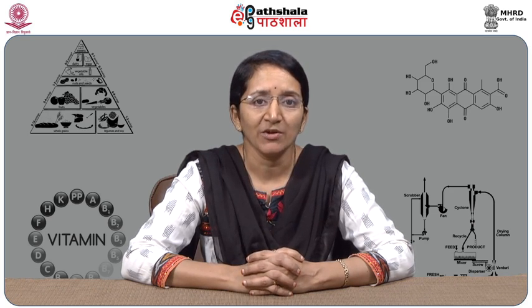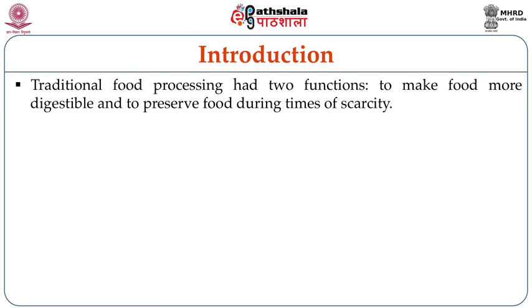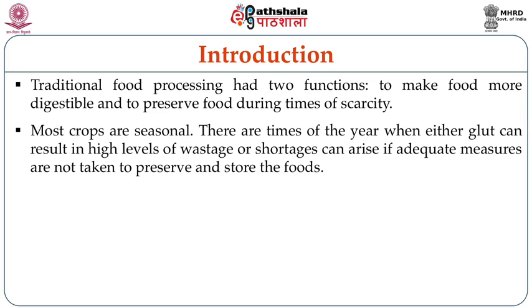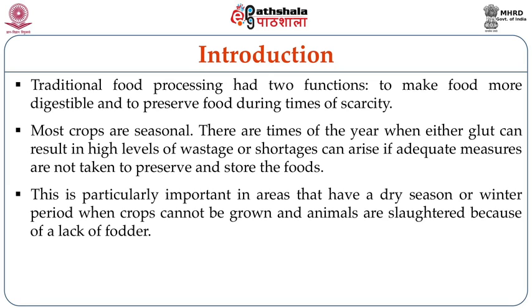The traditional way of food processing had just two basic functions. The first one was to make the food more digestible, whereas the second was to preserve the food during times of scarcity. Most crops are seasonal, and there are times of year when either glut can result in high levels of wastage or shortages can arise if adequate measures are not taken to preserve foods when the crop was produced in plenty. This is particularly important in areas that have a dry season or winter period when crops cannot be grown and animals are slaughtered because of lack of fodder.